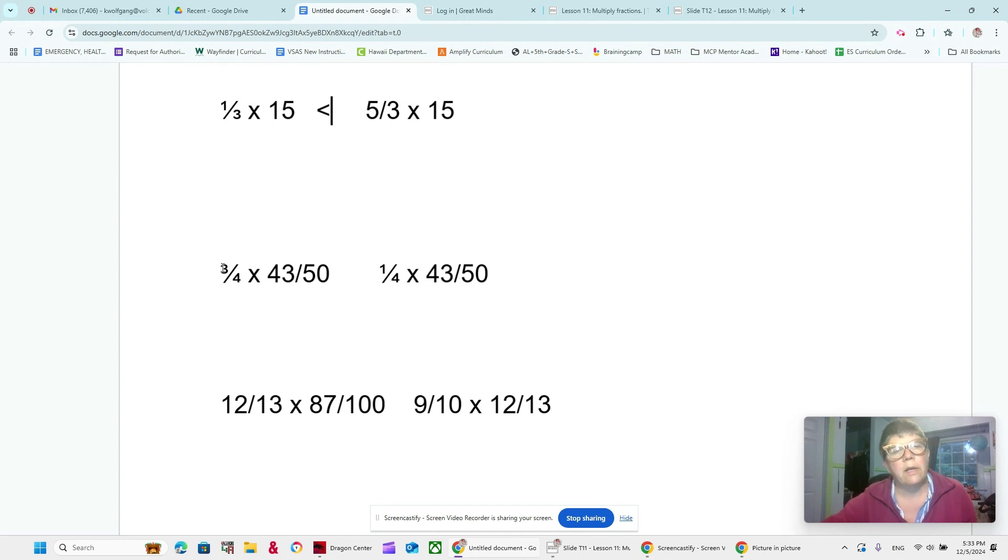Okay, let's try this one. Four-thirds times 43-50ths versus one-third of 43-50ths. Now, our 43-50ths is staying the same, and that's looking kind of complicated, but we can see here three-fourths of it or one-fourth of it. It's like asking you, do you want three-fourths of my donut or one-fourth of my donut, right? The one-fourth is going to be smaller, so the three-fourths is greater, the one-fourth is smaller.